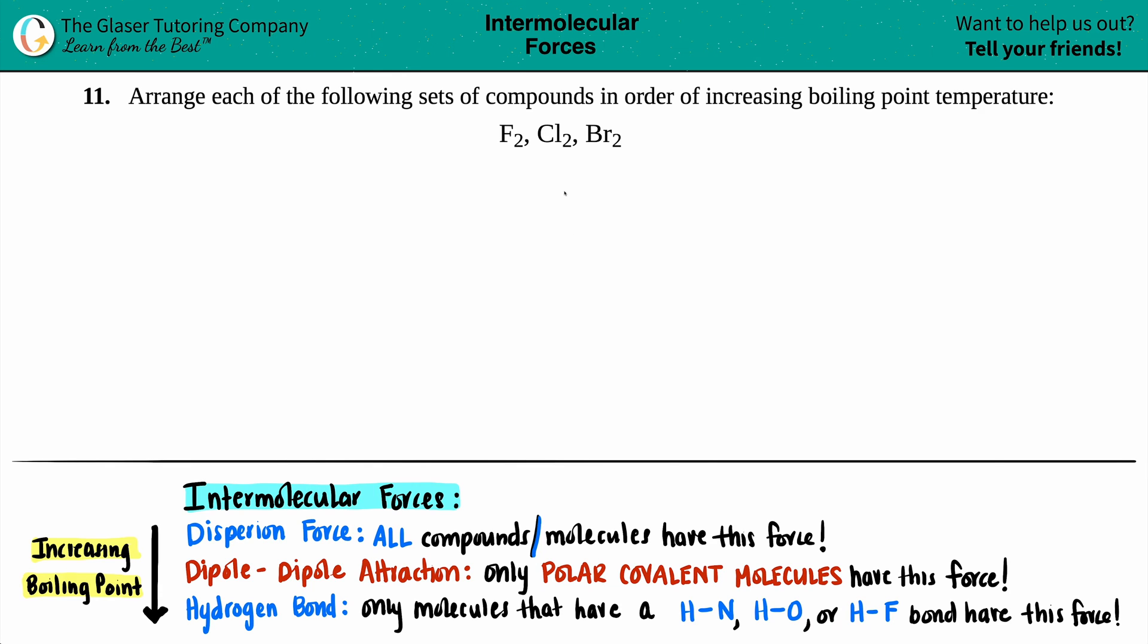Number 11. Arrange each of the following sets of compounds in order of increasing boiling point temperature. And then we have F2, Cl2, and Br2.